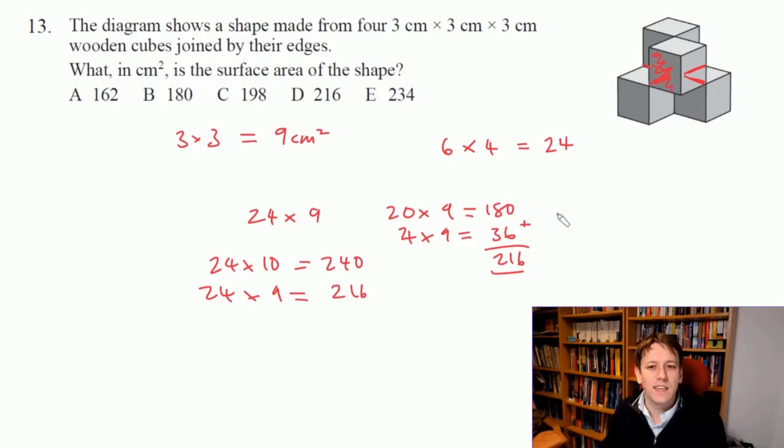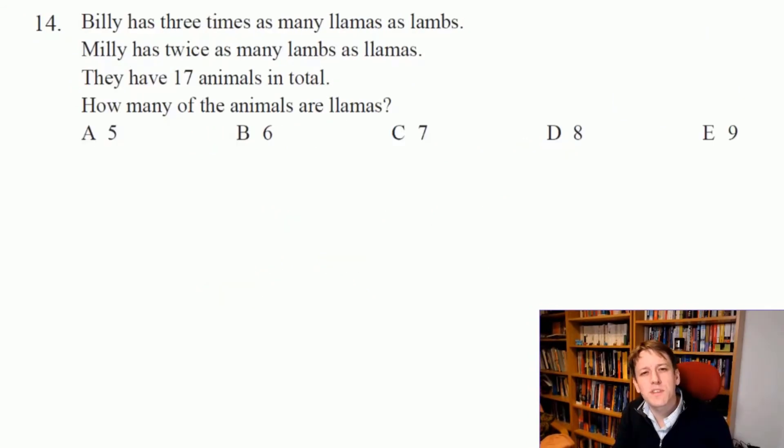If Billy has three times as many llamas as lambs, his llama to lamb ratio must be 3 to 1. In particular that means that the total number of animals that he has must be a multiple of four.